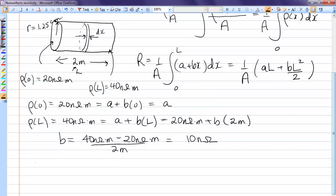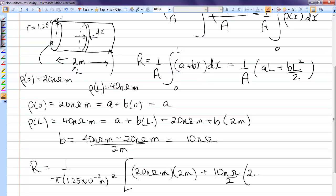Okay, so we can go ahead now and sub these values into our formula for the resistance. The area is π times 1.25 centimeters. We have to convert that to meters squared. A is 20 nanohm meters. L is 2 meters, plus B, 10 nanohm, over 2 times L squared, 2 meters squared. If you put all those values in, you get 0.12 milliohms. And that's the answer for the resistance.